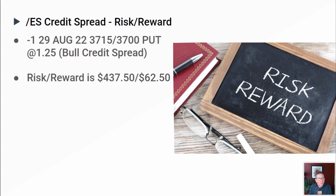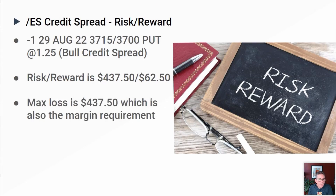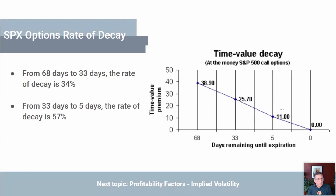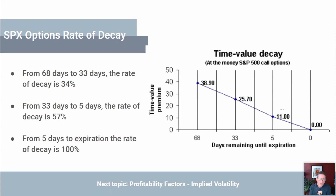You can trade even smaller than SPX. The max loss here is $437, where SPX would be $1,000 minus the credit you receive. Looking at theta decay: from 68 to 33 days the rate of decay is 34%; from 33 days to 5 days it's 57%; and from 5 days to expiration the rate of decay is 100%. I only trade these as one-day and two-day trades. I don't use the five-day or 33-day windows for these.